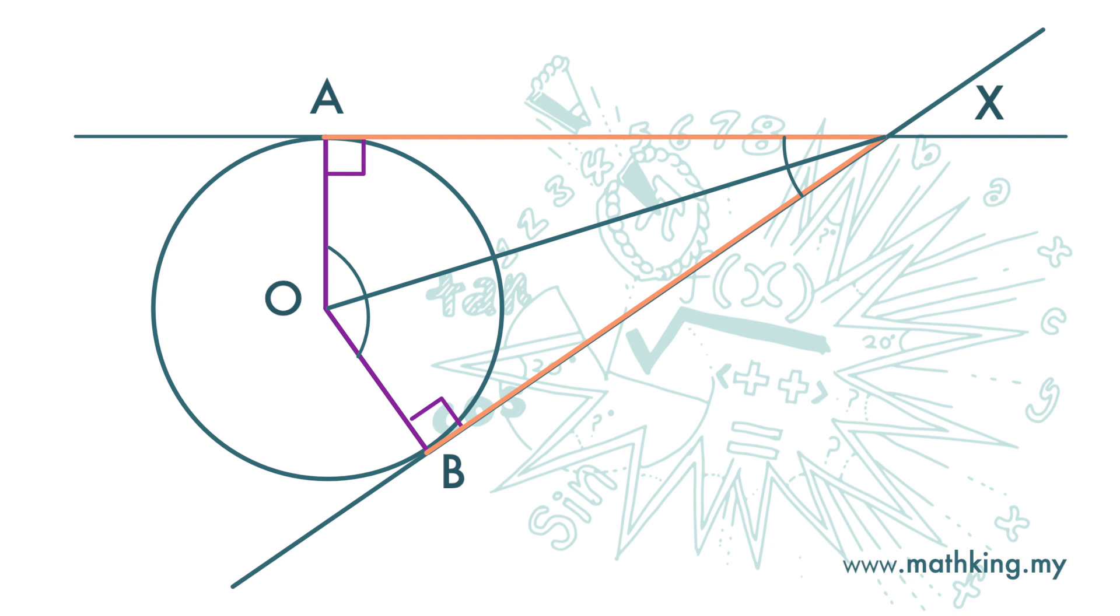Also this angle plus this angle is 90 degrees. Because in this triangle, angle at A here is 90 degrees, so the sum of these two angles must be 90 degrees. The sum of these two angles is also 90 degrees.